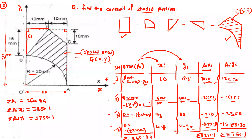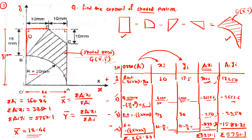Now we have to find out x-bar and y-bar. For x-bar, we have the formula: summation Ai*xi divided by summation of the area. Put this value in the equation and get the value of x-bar. So x-bar is equal to 12.46. And y-bar, this value is 22.04.